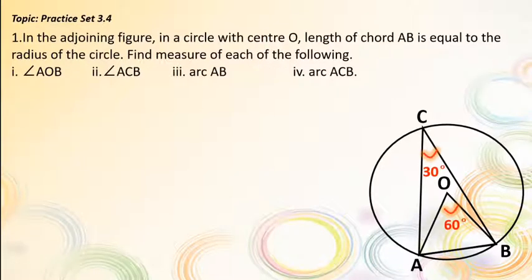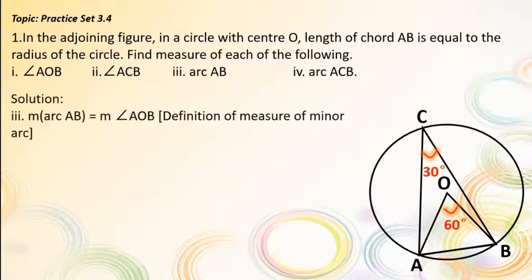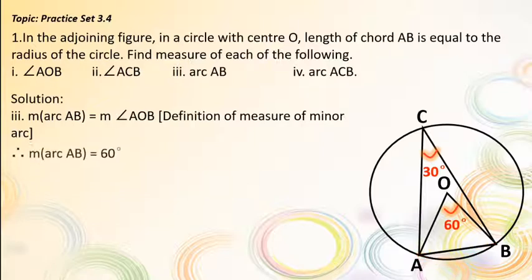Third, measure of arc AB = measure of angle AOB, by definition of the measure of minor arcs. Therefore, measure of arc AB = 60°.